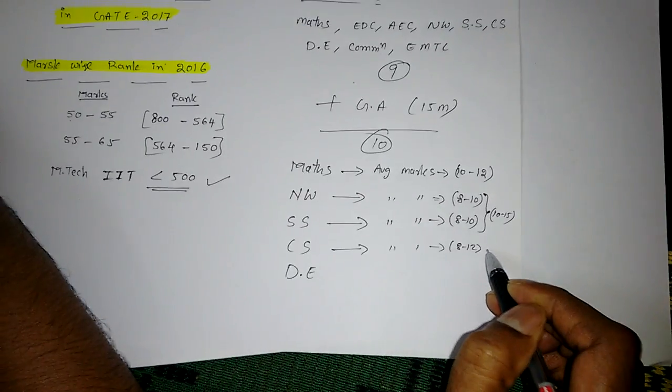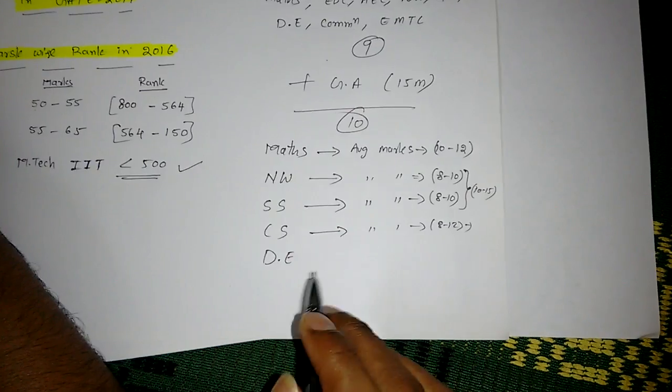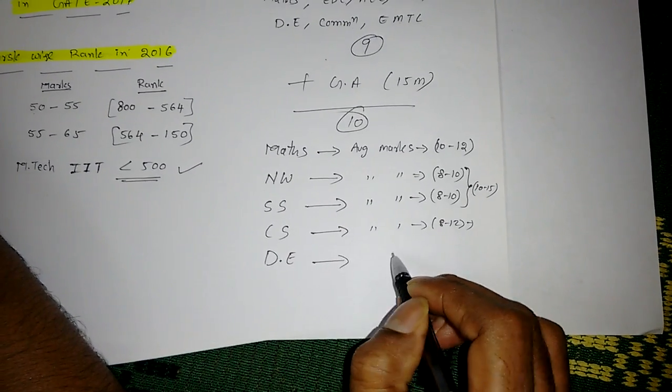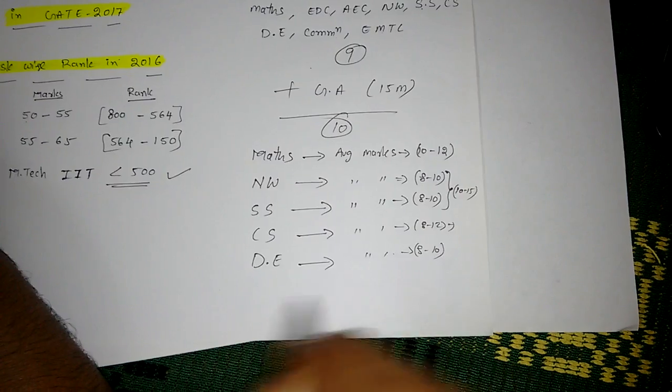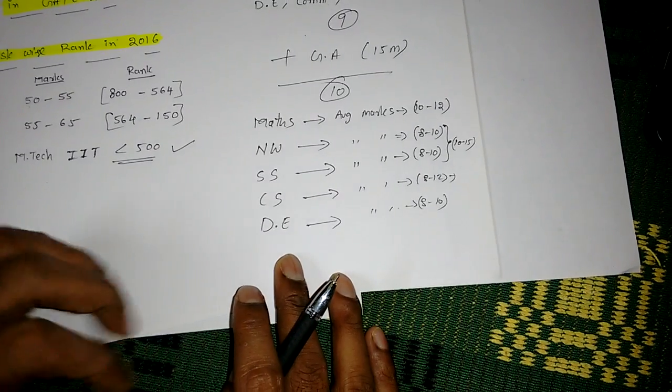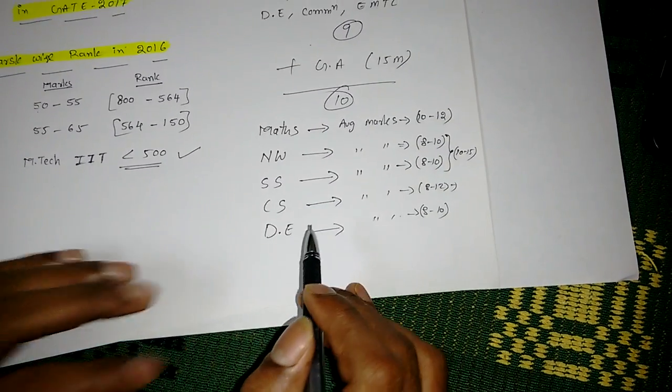Similarly Control Systems, there is 8 to 12 marks, it may change. Digital Electronics is also 8 to 10 marks only.